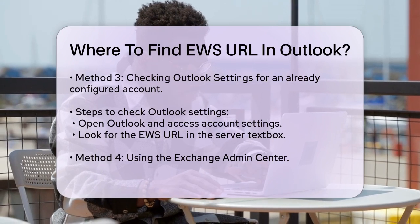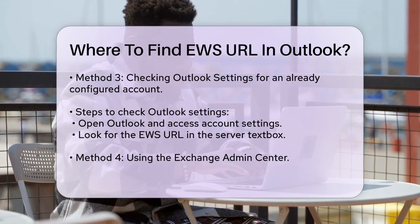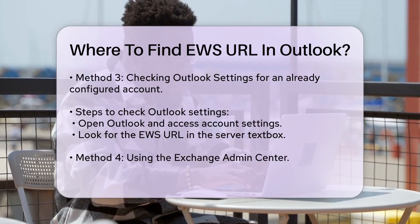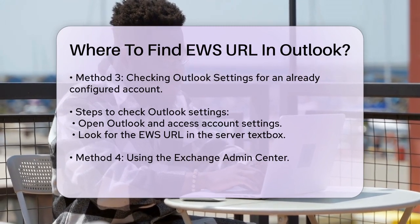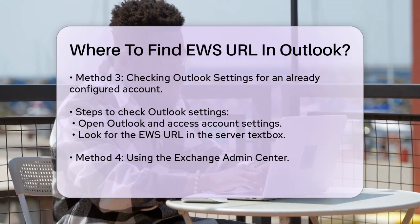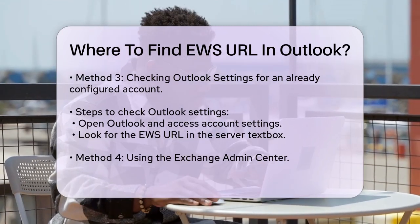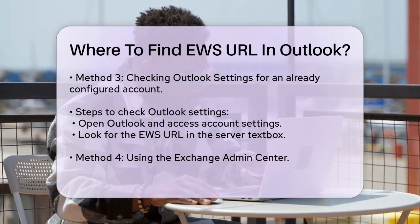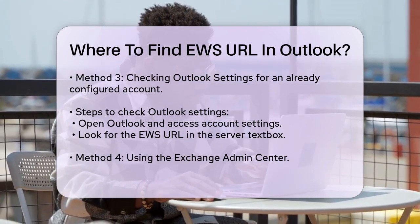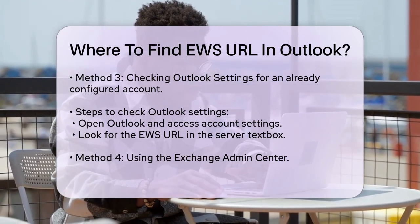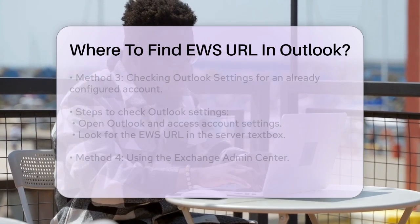Using the Exchange Admin Center: if you have access to the Exchange Admin Center, you can find the EWS URL there as well. Go to the Exchange Admin Center and click on Servers. Navigate to Virtual Directories and double-click on EWS. In the General Settings, you will find the EWS URL listed.